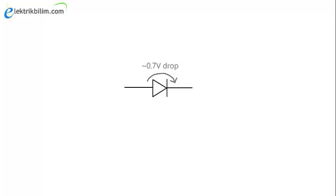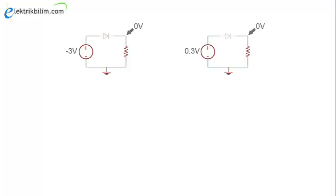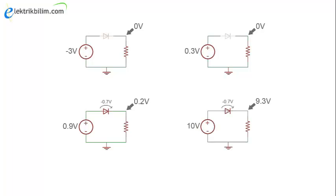Check out these examples to see what I mean. With a negative voltage on the input, the diode can't turn on, so you get nothing on the output. With 0.3 volts on the input, it's still not enough to turn on the diode, so again you get nothing. With 0.9 volts on the input, it's just enough to turn on the diode, but because of the voltage drop, you only have 0.2 volts left. And with 10 volts minus 0.7 volts, you get 9.3 volts.